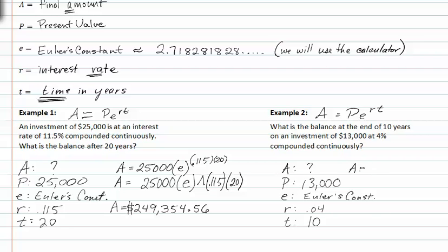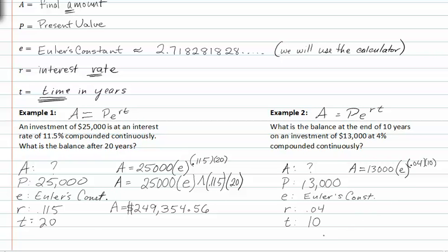Rewriting this, we get A is equal to thirteen thousand times E raised to the point zero four times ten. There's nothing wrong with using some parentheses, especially when you're using your calculator. If we want to enter it in the calculator, it would be thirteen thousand times E carat point zero four in parentheses, times ten. When we type this all in, we get nineteen thousand three hundred ninety-three dollars.